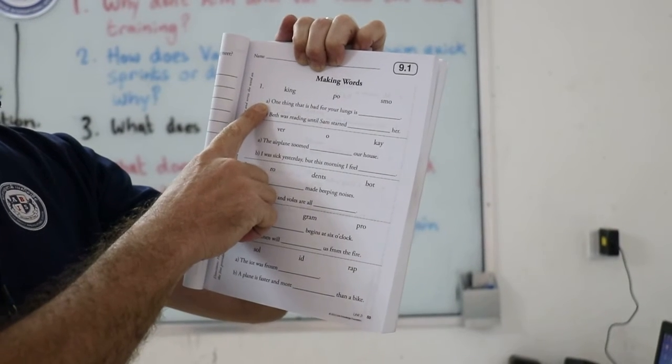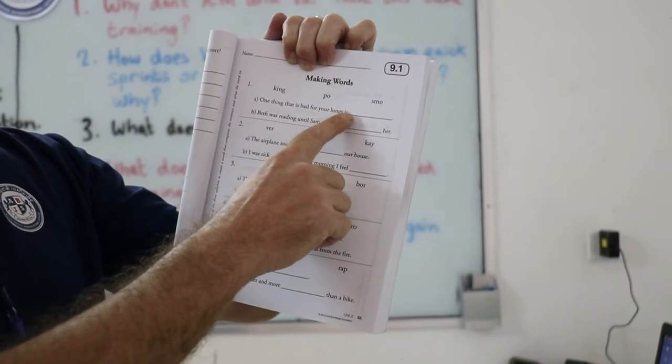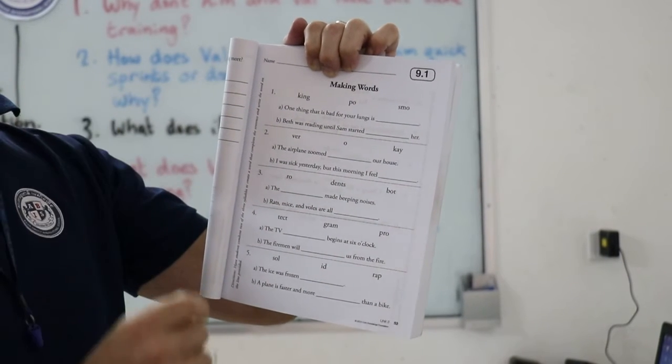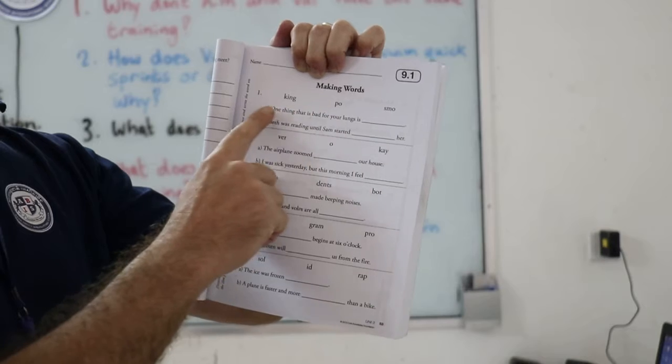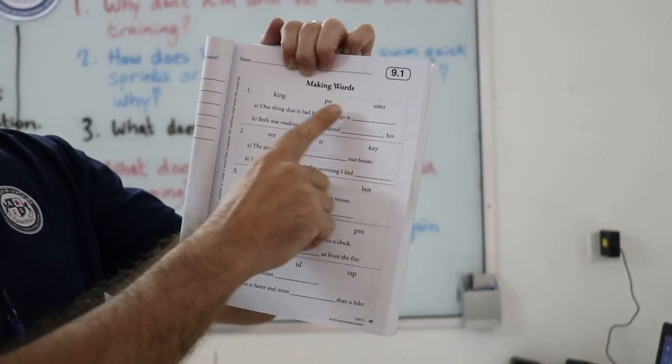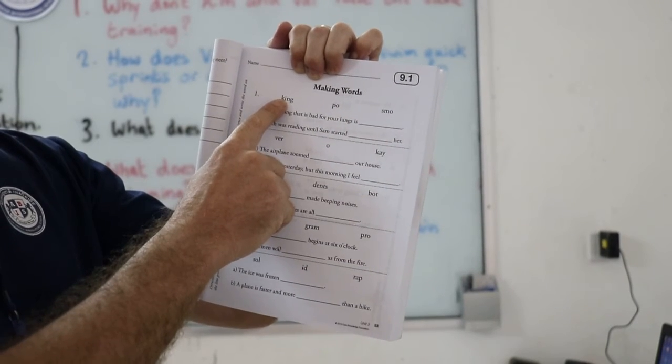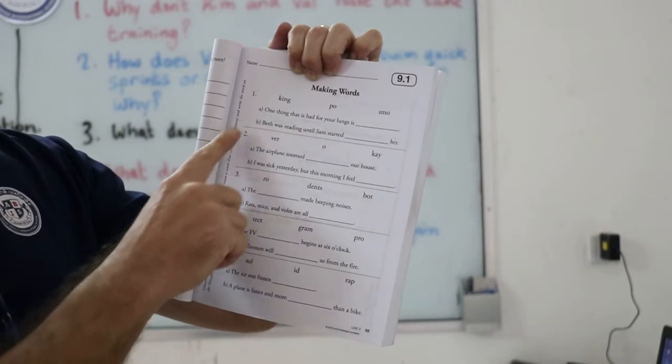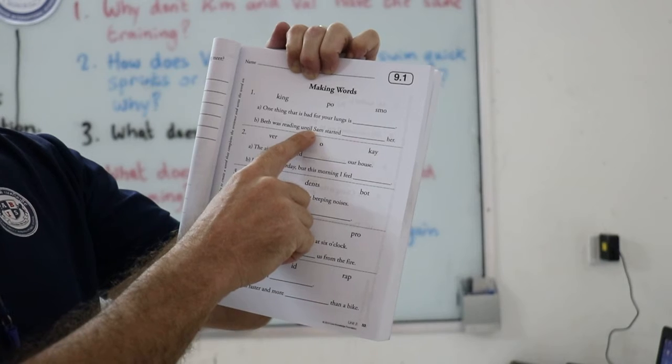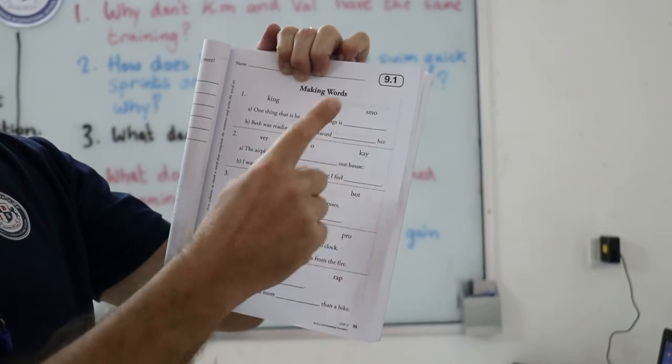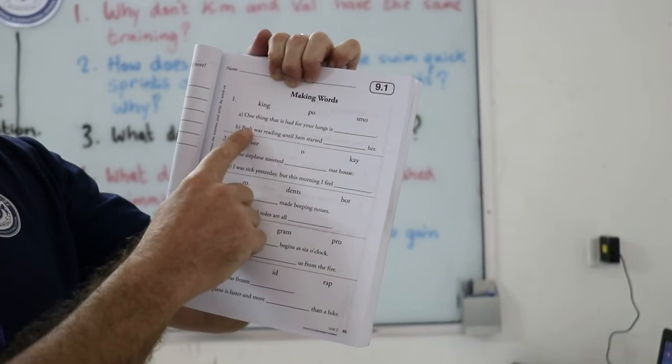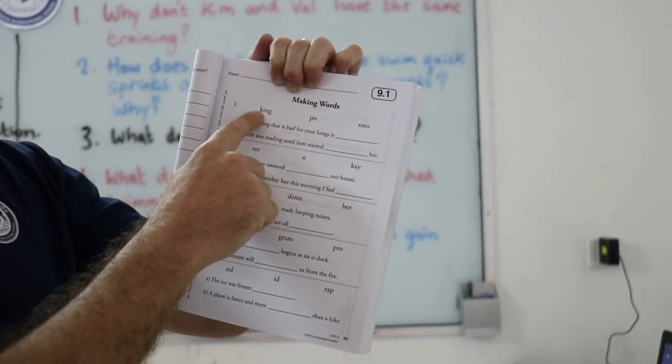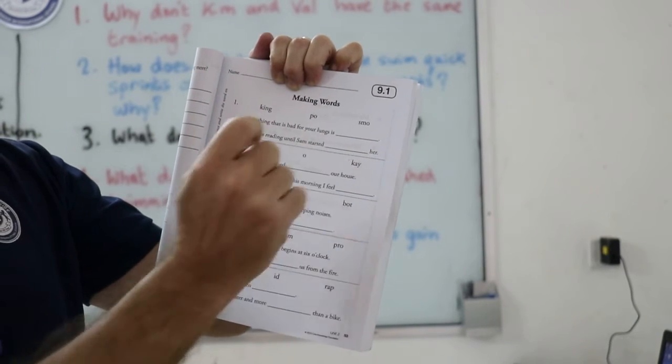So, the first question, one thing that is bad for your lungs is what? I'll help you out on this one. One thing that is bad for your lungs is smoking, so write smoking in there. And part B, Beth was reading until Sam started what? Her. Beth was reading until Sam started poking her. So, I write poking in there.